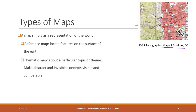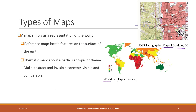The second map is called a thematic map. It focuses on a particular topic or theme, and most likely we are going to make abstract and invisible concepts become visible and also comparable. For example, world life expectancy — those numbers are not physical features of the earth's surface, but we can map those variables onto the map using different colors, which allows us to compare those numbers.